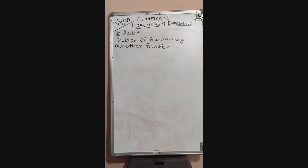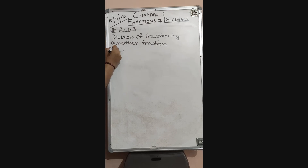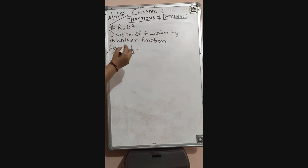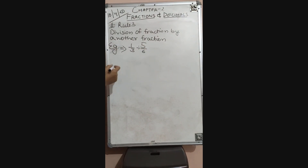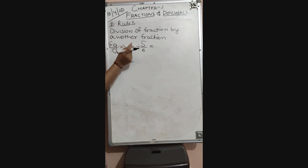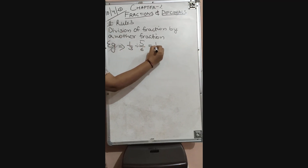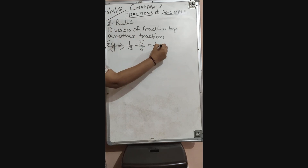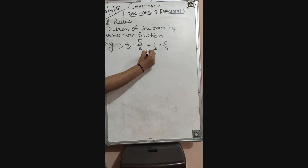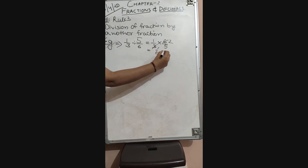Let's take one example: 1 upon 3 divided by 5 upon 6. We keep the first fraction as it is and multiply by the reciprocal of the second fraction. The reciprocal of 5 upon 6 is 6 upon 5. So 1 upon 3 multiplied by 6 upon 5: 1 times 6 is 6, and we simplify — 3 ones are 3, so the answer is 2 upon 5.